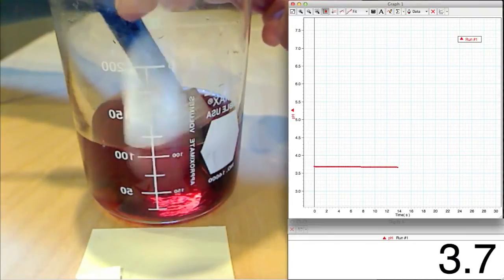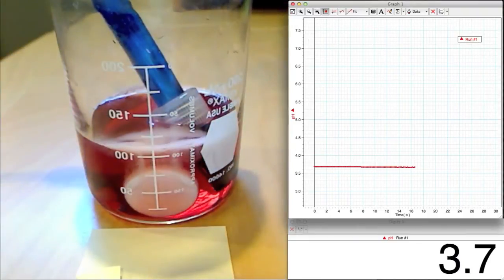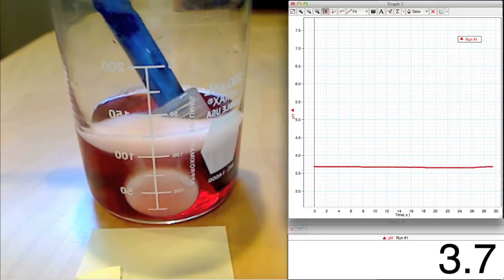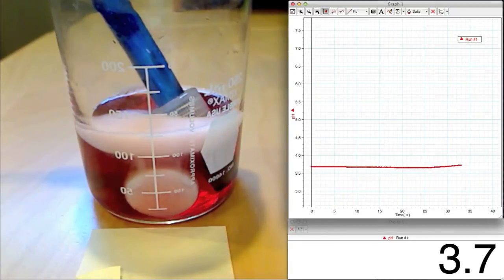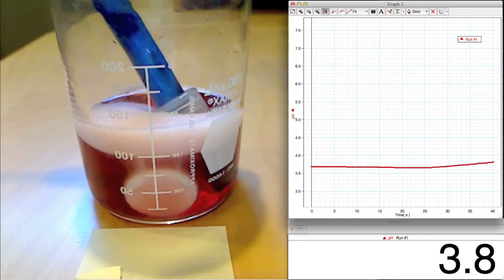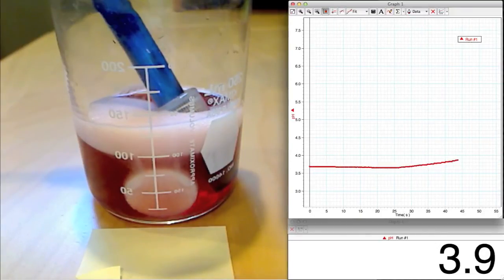As you can see, when the tablet is added, the pH of the mixture slowly begins to rise. This indicates that the Alka-Seltzer is reacting with and neutralizing the cranberry juice.